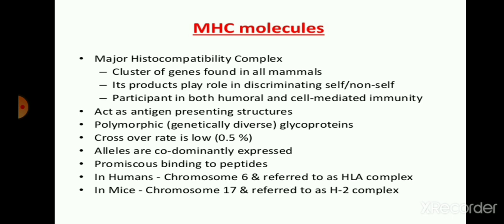MHC molecules show prominent binding to peptides. They bind to the peptide of the antigen or the self-protein to recognize self and non-self molecules. This MHC molecule is synthesized by chromosome number 6 in human beings, which is referred to as HLA molecules — that is, human leukocyte antigen complex — and in mice it is on chromosome 17 and is referred to as the H2 complex.